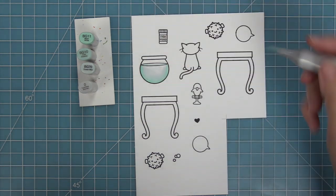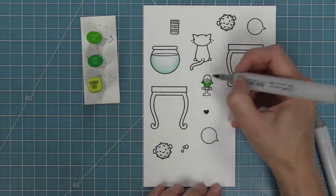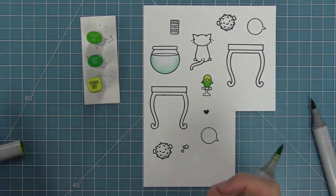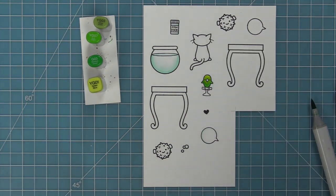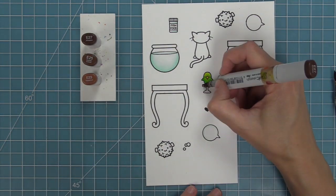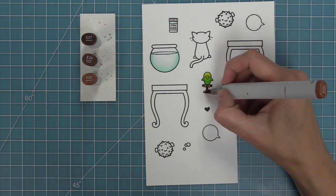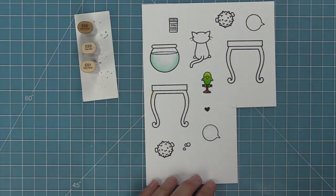We're going to be using Copic markers to color in these images. I love Copic markers so much—they're my favorite way to color. We're just going to be coloring these in some nice bright colors. I love the green for the little bird. For his stand I'm going to be using some E20 browns because later for the table we're going to use E50s and I wanted to make sure there was a nice contrast.